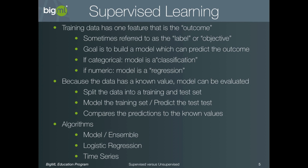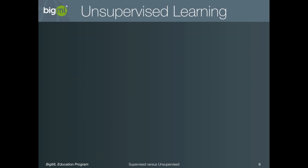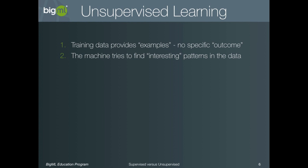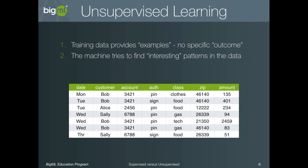So how does this compare to unsupervised learning? In this case, the training data provides examples but we have no specific outcome — that is, there's no label. The machine instead tries to find interesting patterns in the data. We might start with a dataset of transactions where we know the date, customer, account number, authentication type, purchase class, zip code, and the amount. Notice that there is no specific label — for example, a label indicating which of these transactions are fraudulent and which are not is not present.